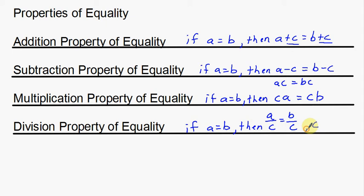Think about that for a moment — C can't equal zero. Why not? Well, if we look at the conclusion, if C is zero, then we are dividing by zero, which is a big no-no. You can't divide by zero. It doesn't matter what the equations look like. So a lot of times, especially when you get into higher level mathematics, you have to have small rules like this because sometimes you encounter things that you simply can't do. In this case, we cannot divide by zero.